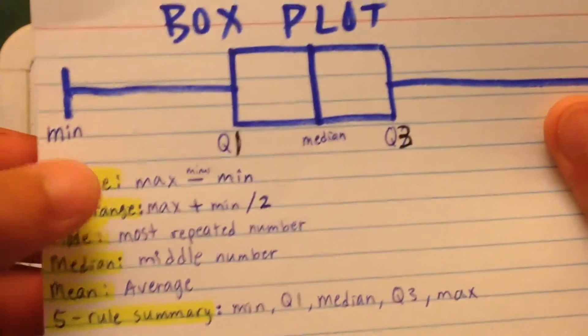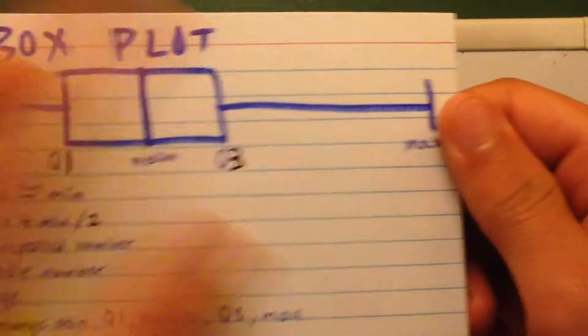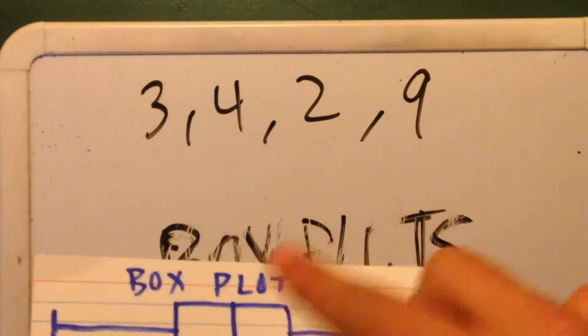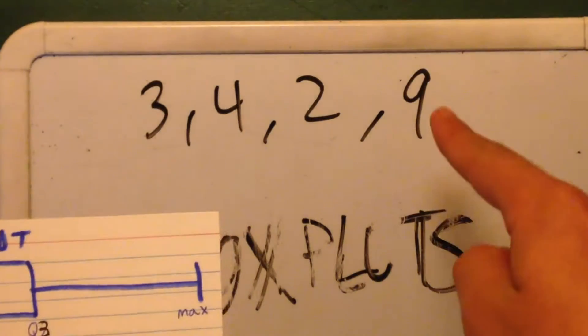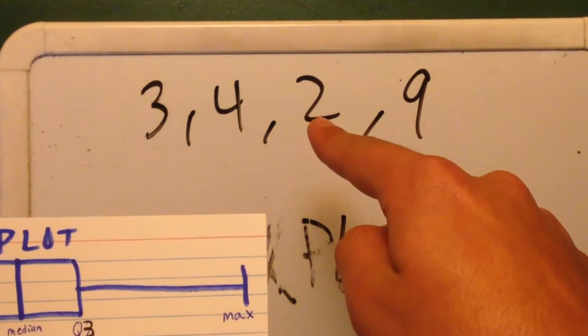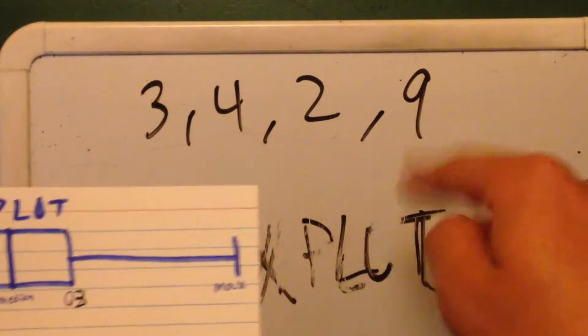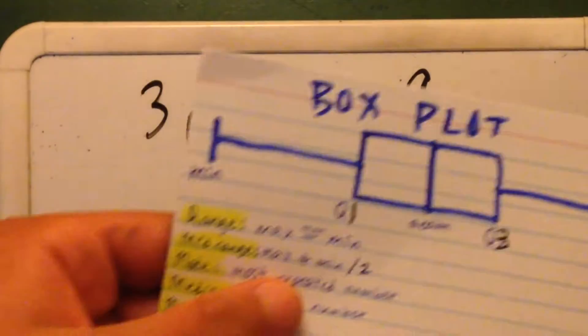I'm just going to go over these. The range is the maximum minus the minimum. In this case it would be 9 minus 2. And then the midrange is the max plus the minimum, and you divide by 2. So 9 plus 2, 11 divided by 2, that's 5.5.